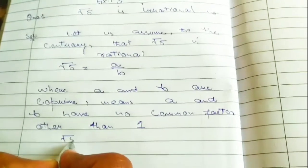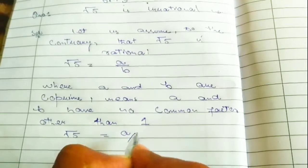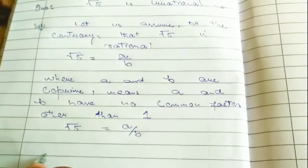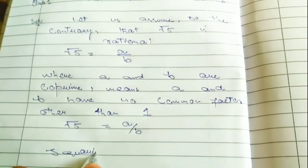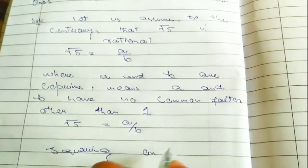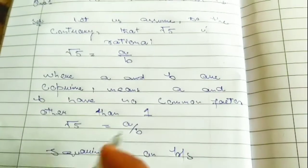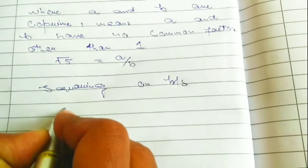Now we will square on both sides. Squaring on both sides, squaring under root of 5 square equal to A upon B whole square.